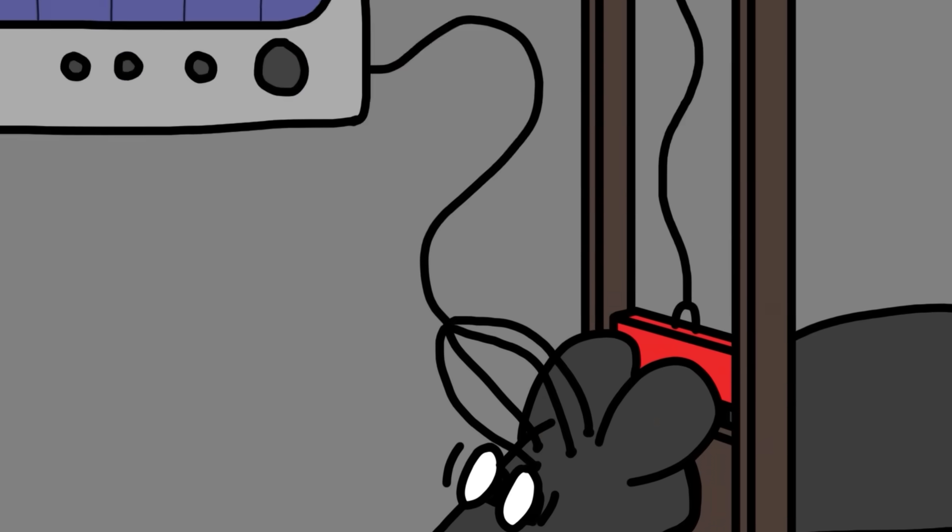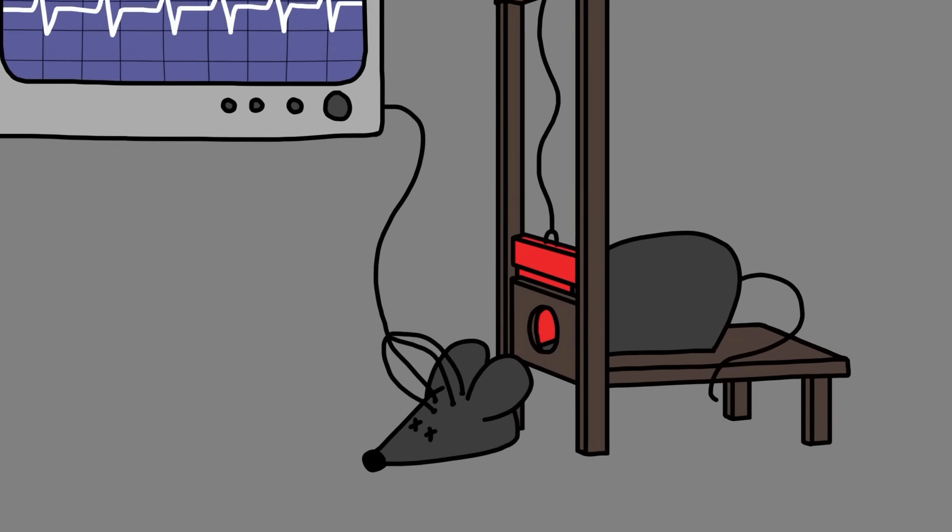But why attend public executions when you can decapitate heads in a lab? Rats, of course. Fast forward to 2011, when Dutch researchers hooked up some rats to an electroencephalograph, which measures brain activity. Then, snip. And guess what? Their little rodent brains didn't immediately check out. For a full four seconds, the EEG showed clear signs of consciousness. And over the next minute, the brain slowly faded out like a dying flashlight. So let's recap: your severed head has a solid four seconds to process what just happened. A full four seconds of 'Wait, what?' And then, gradually, everything fades to black.